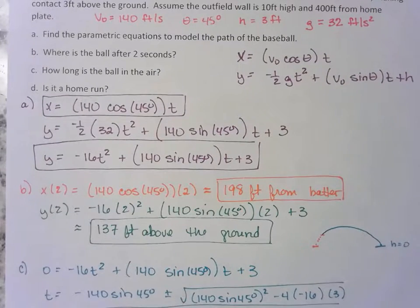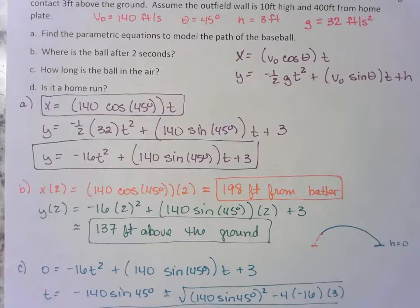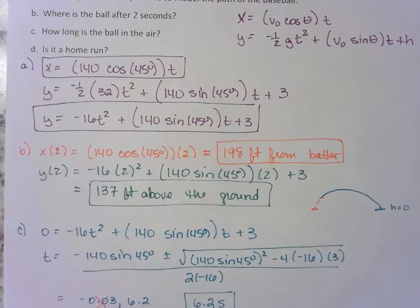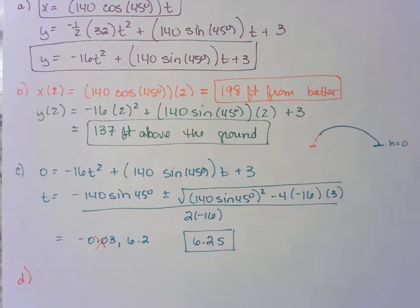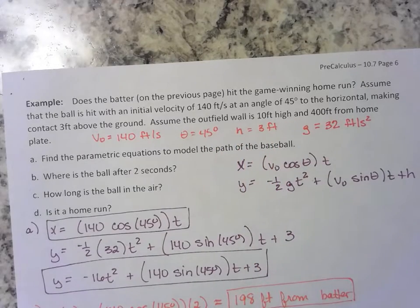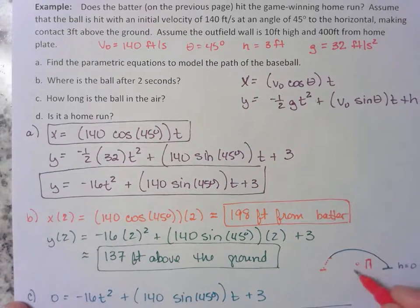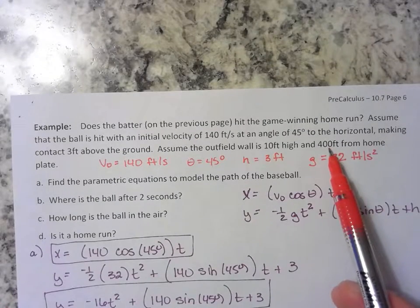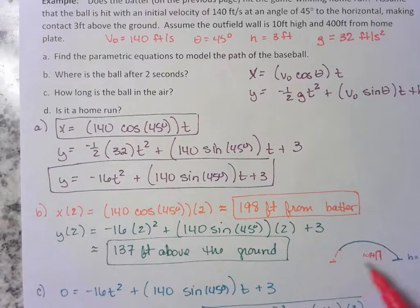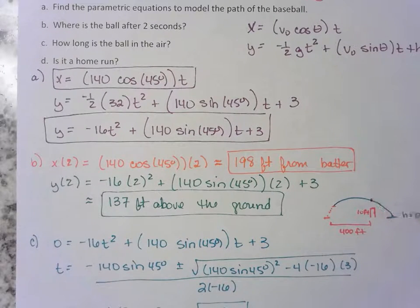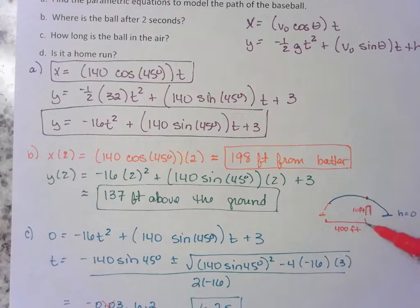All right, so what does D say? Is it a home run? Well, that's a loaded question, right? Is it a home run? Let's see. We were also given this information. The outfield wall is 10 feet high. So if we use this little picture, hopefully it was a home run. So we'll say that the outfield wall is 10 feet high. And we also know that that wall is 400 feet from home plate. So the guy hits the ball from here. And this is 400 feet.